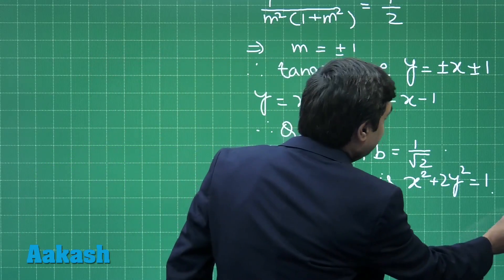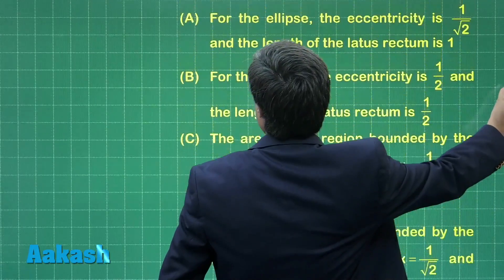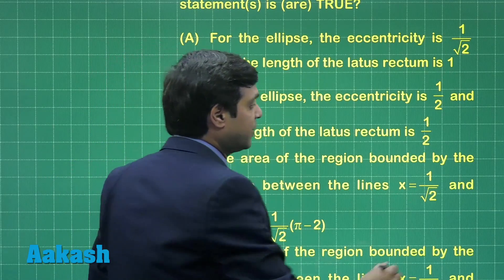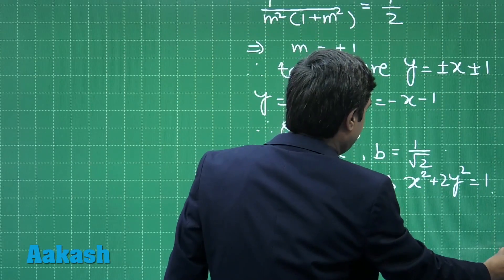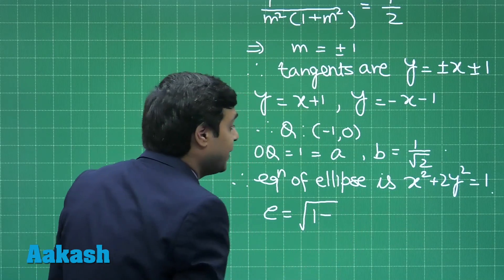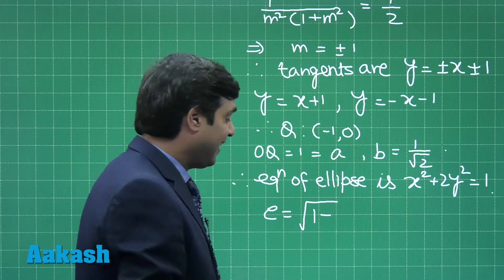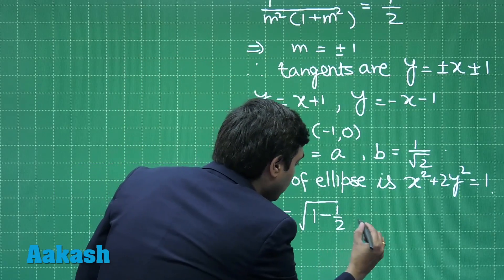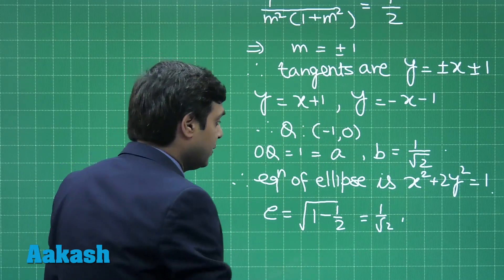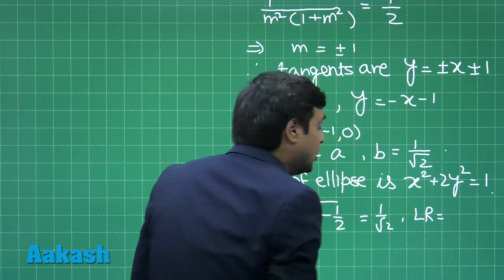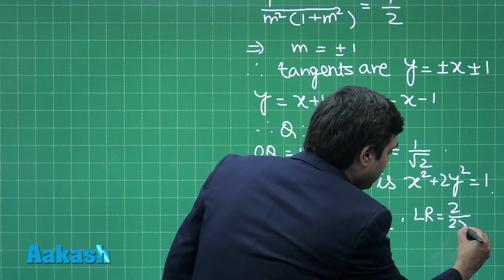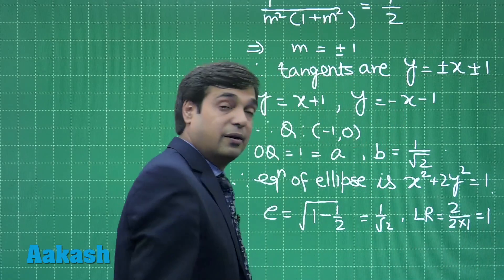Now moving to the given question, first option is about eccentricity and length of latus rectum of this ellipse. So let us find out the eccentricity. Eccentricity is given by √(1 - b²/a²) = √(1/2), so it comes 1/√2. And length of latus rectum, that is LR, is 2b²/a, so it comes 2/(2·1) = 1.